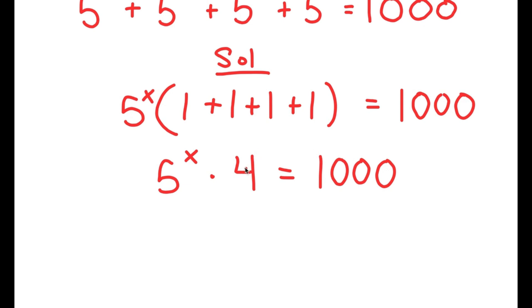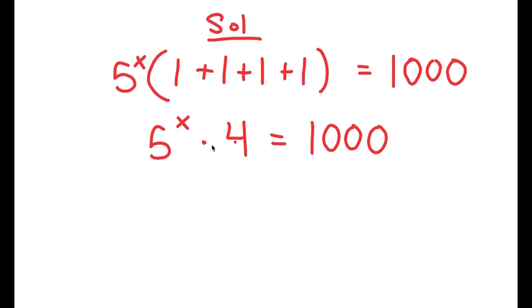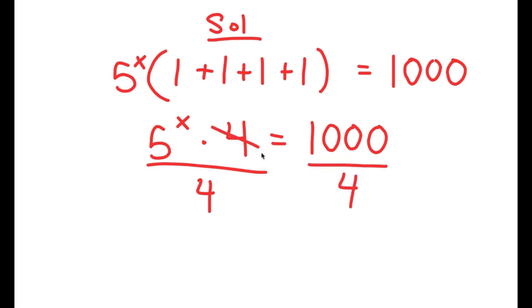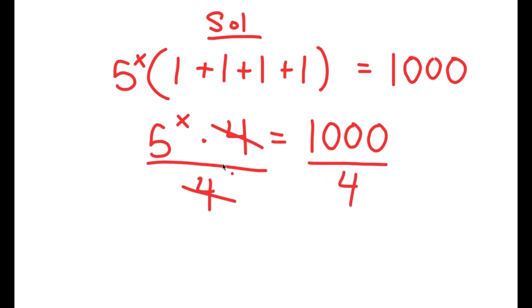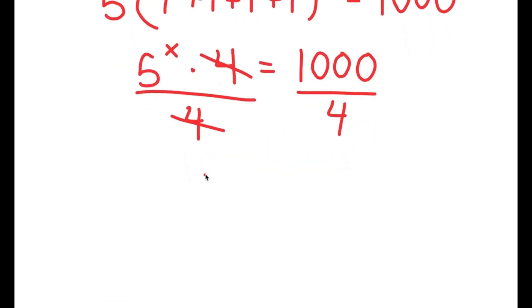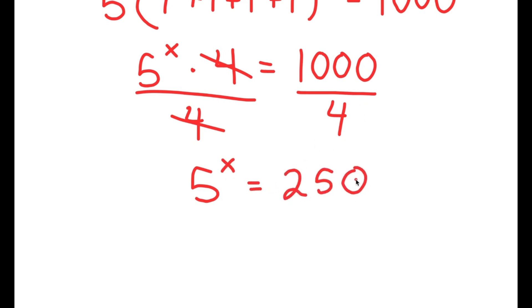Now, we want to isolate x, so I'm going to divide both sides by 4. So then these two cancel out, and I get 5 to the power of x is equal to 1000 divided by 4, which is 250.